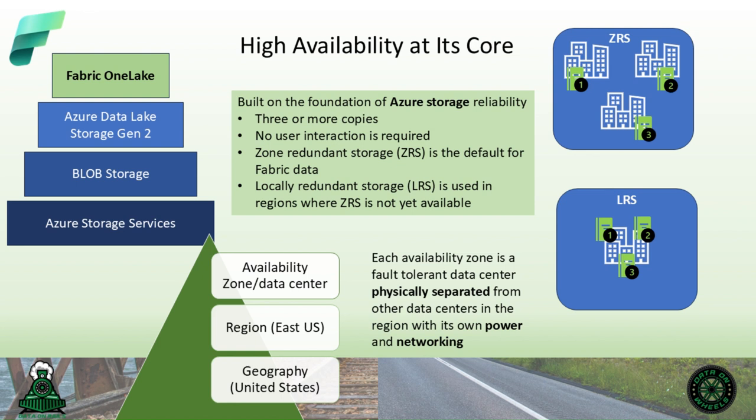With locally redundant storage, three copies are stored in the same data center in a region. This is commonly called LRS. Zone redundant storage, also known as ZRS, creates three copies in different data centers within the same region. This uses the availability zone functionality within Azure. Each of these data centers has separate power and networking in order to maintain uptime, even if an individual data center has an issue. This also protects you in the situation where supported infrastructure has an issue within the region.